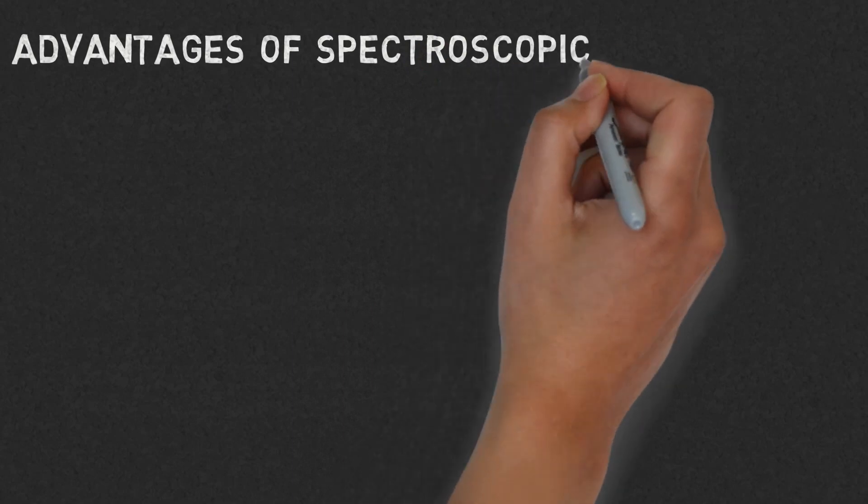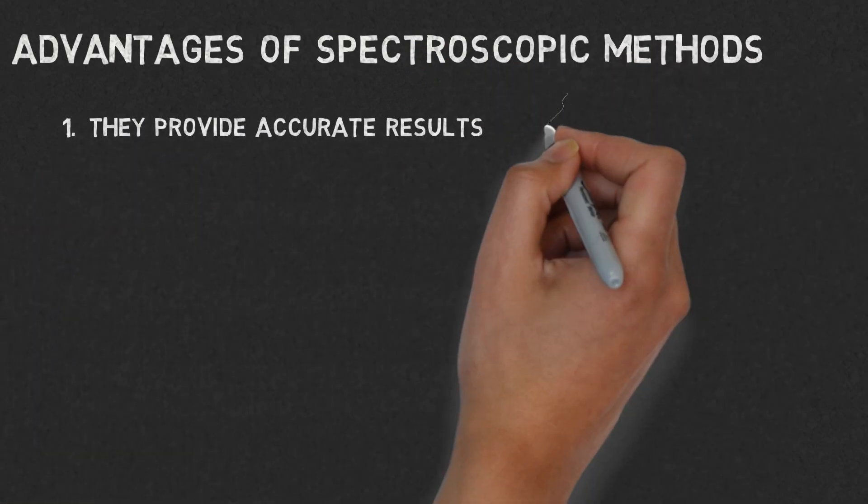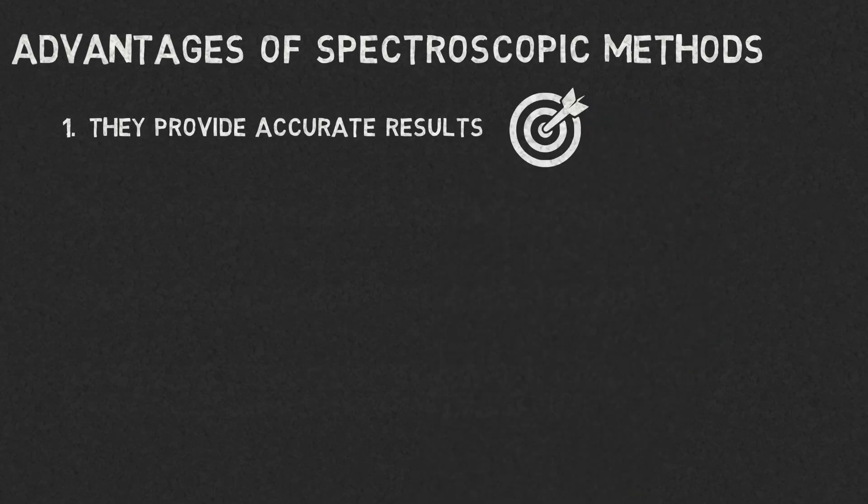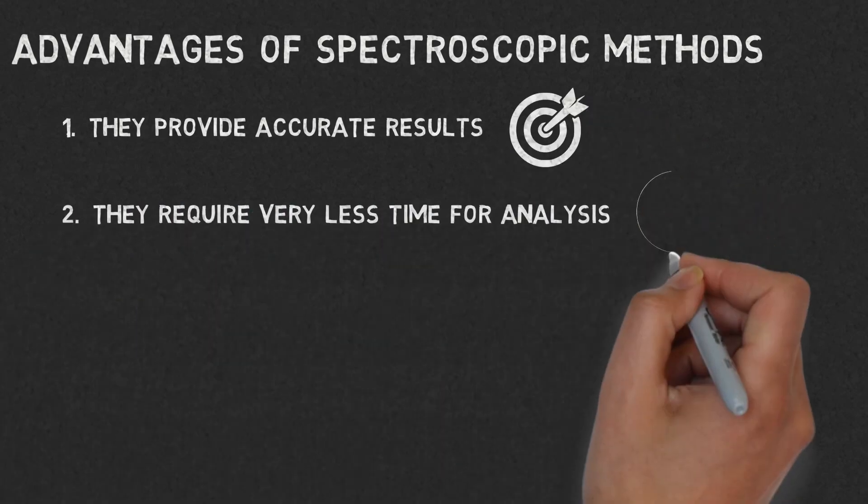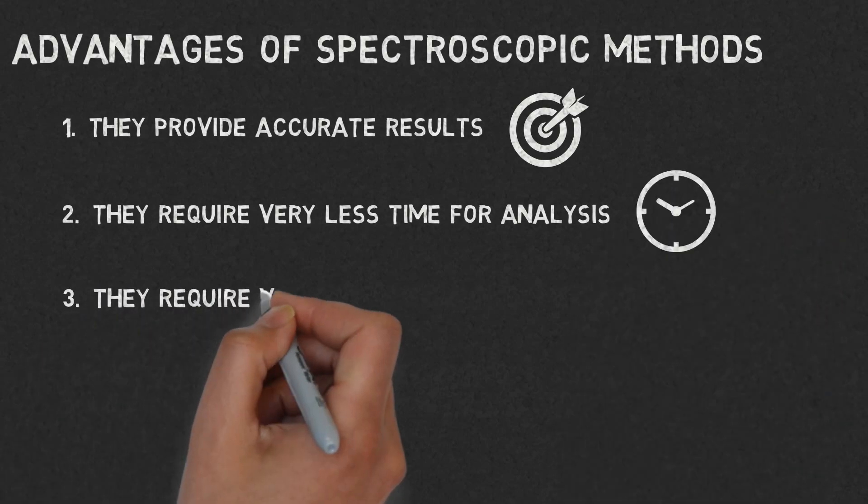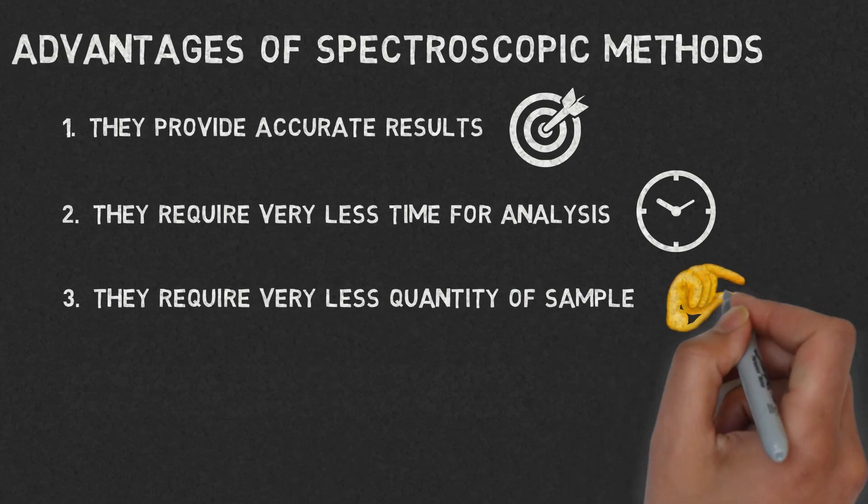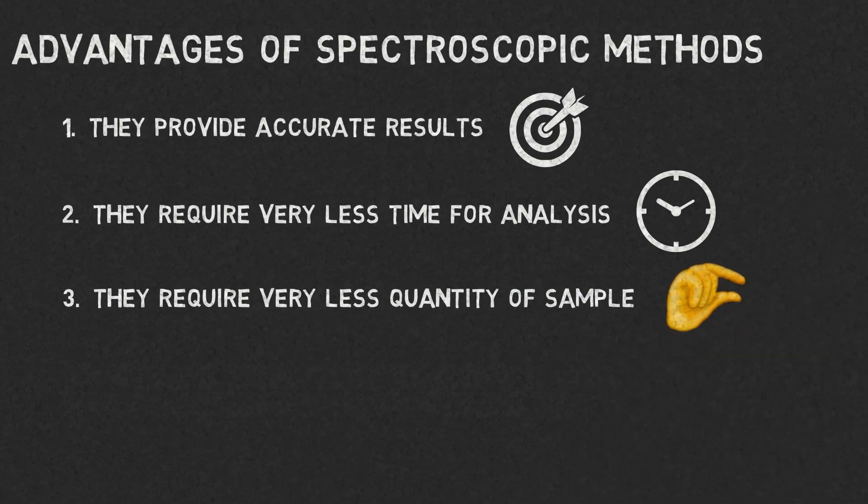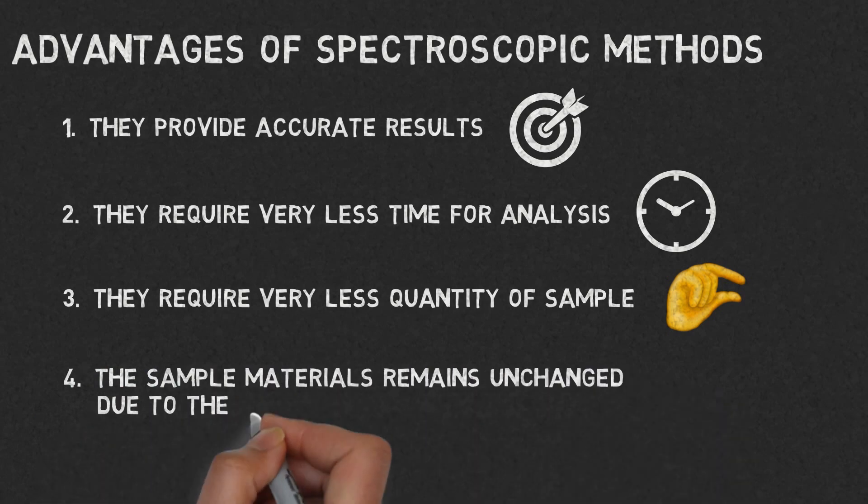Advantages of spectroscopic methods: 1. They provide accurate results. 2. They require very less time for analysis. 3. They require very less quantity of sample. 4. The sample materials remain unchanged due to the analysis and can be reused.